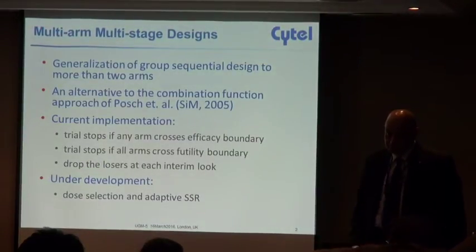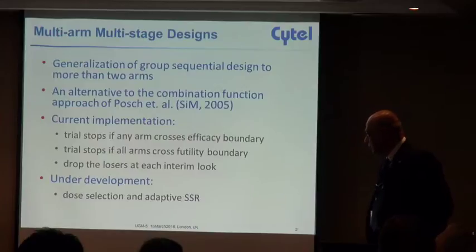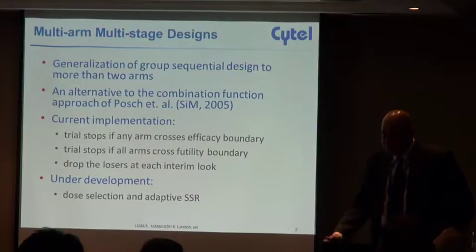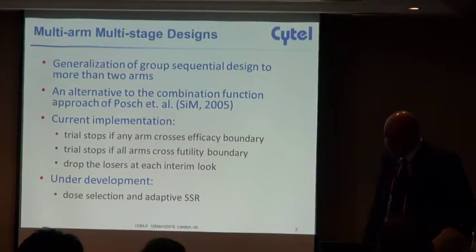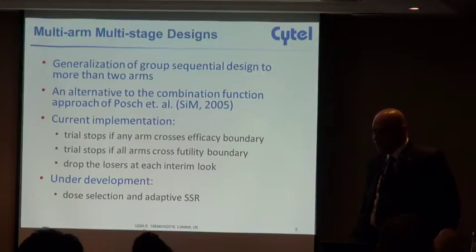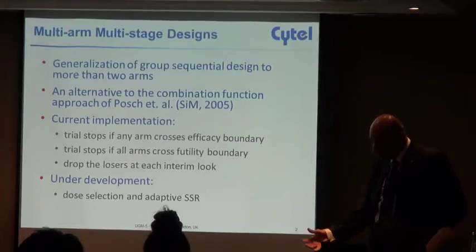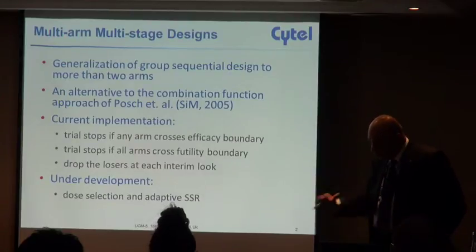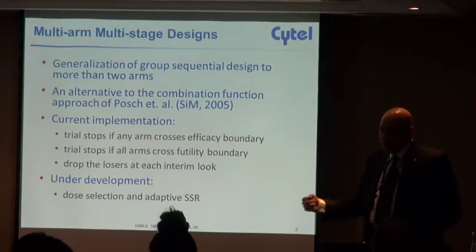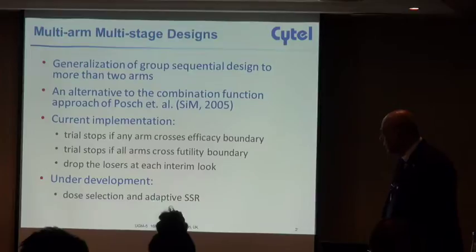Only if every single arm crosses the futility boundary would you stop the trial entirely. Now under development also for East 6.4 are these two features: in addition to dropping losers, actually making an active selection at an interim analysis. Although there were some losers that didn't cross the futility boundary at this point, I only want to choose one or two. You can do a selection and we can also do a sample size re-estimation.